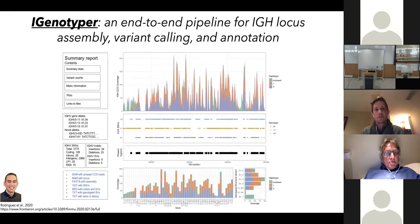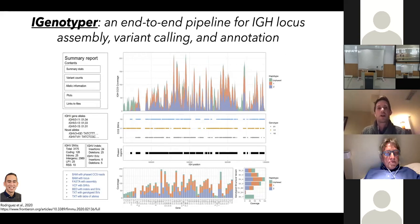If anyone's interested, the tool is iGenotyper — you can find it on GitHub. Feel free to reach out if you're interested; we're keen to have people use it.